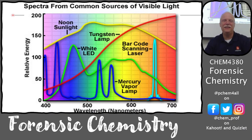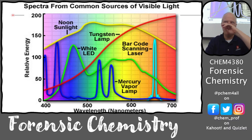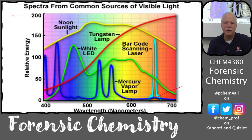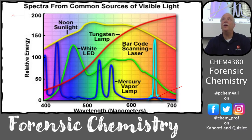Here are the different sources: sunlight, tungsten lamp, the red scanning laser — it used to be a helium-neon laser at around 635 nanometers, now it's some sort of diode laser. Notice how narrow the laser is — LEDs are also pretty narrow. LEDs emit in a very narrow band. We have the mercury vapor lamp, which gives very little red but has RGB — red, green, and blue — so it appears white to us.